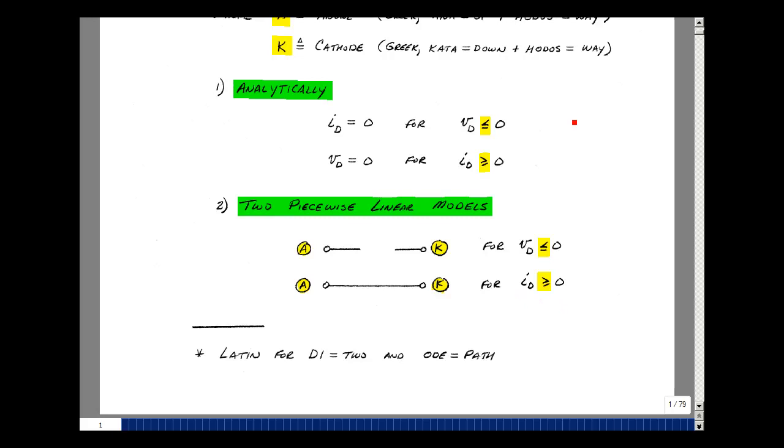Besides anode and cathode, the name diode itself is actually Latin for two ways. So we have a low resistance way and we have a high resistance way.